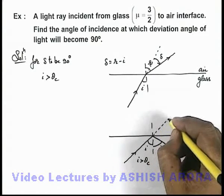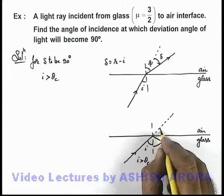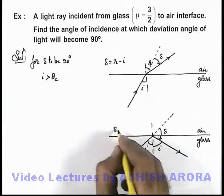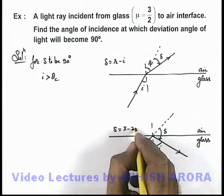And with respect to the original direction of incident light, the light ray is deviated by an angle delta. The value of delta we can write as π minus 2i.